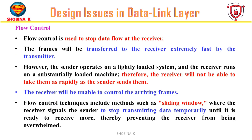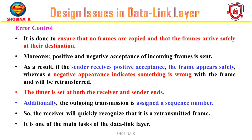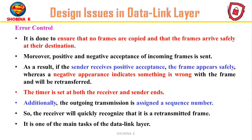Next, flow control as a design issue. Flow control is essential to halt data transmission at the receiver end because the transmitter may send frames too quickly for the receiver to handle. If the sender operates on a lightly loaded system while the receiver is heavily loaded, the receiver may struggle to process incoming frames as fast as they arrive. The flow control technique includes methods such as the sliding window, where the receiver signals the sender to stop transmitting temporarily until it is ready to receive more. Regarding error control: it is done to prevent duplication of frames. Positive or negative acknowledgements are sent for incoming frames — positive meaning the frame arrived safely, negative meaning retransmission is needed. Timers are set to manage retransmissions, and frames are assigned sequence numbers to identify retransmitted frames, ensuring reliable communication.